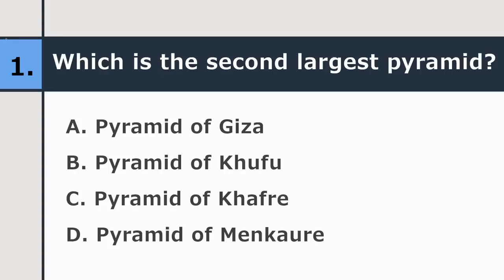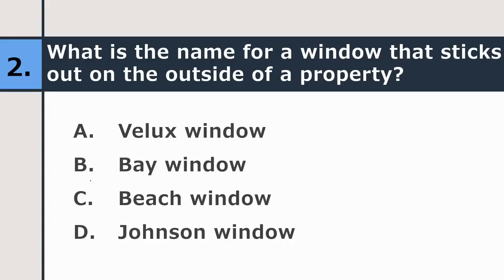First question: which is the second largest pyramid — Pyramid of Giza, Pyramid of Khufu, Pyramid of Khafre, or Pyramid of Menkaure? The correct answer is C, Pyramid of Khafre. Second question: what is the name of the window that sticks out on the outside of a property — velux window, bay window, beach window, or johnson window? The correct answer is bay window.